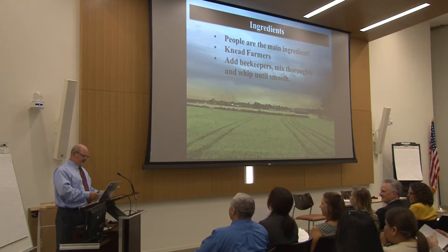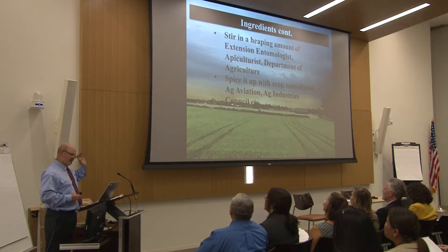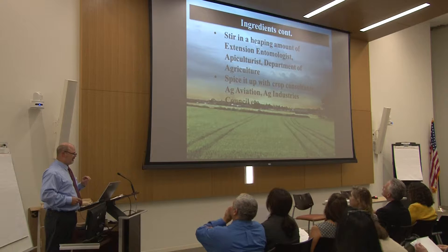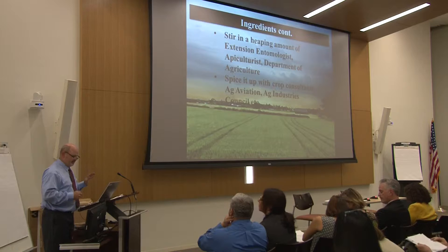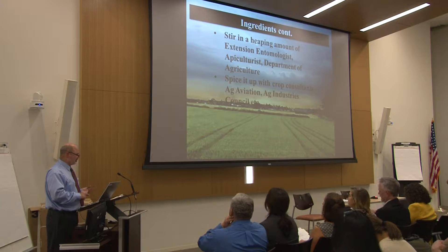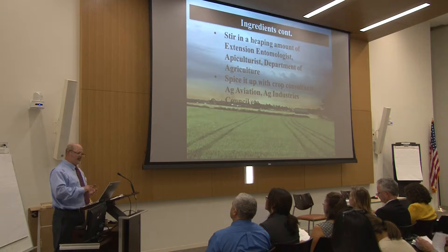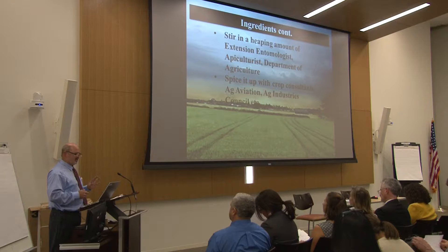Then you add your 'holy trinity' — in cooking that's onion, celery, and bell pepper, but here it's your entomologist, your Department of Agriculture, and your apiculturist. These are your experts. They'll be able to answer questions from both sides, provide information to each other, and really develop what your plan turns out to be. Then you spice it up with whoever else needs to be involved. For us, that was ag consultants and ag aviation — they had to be at the table.